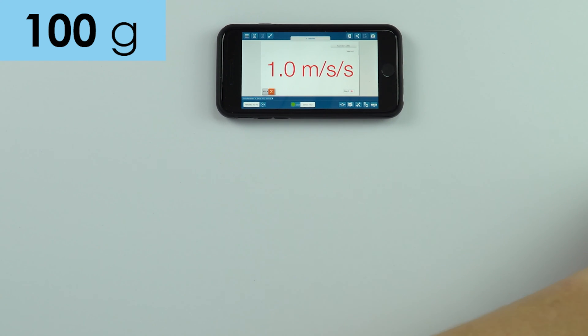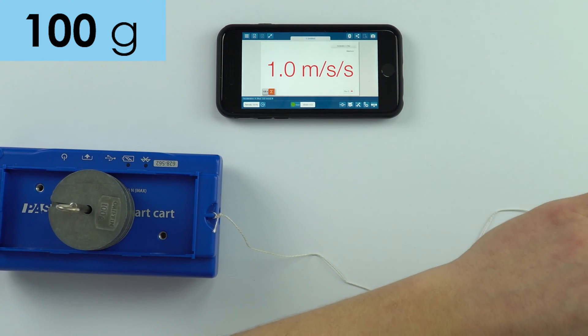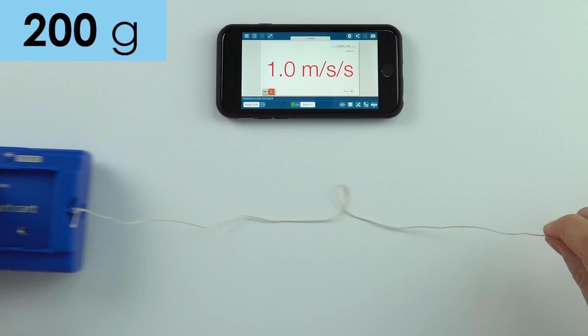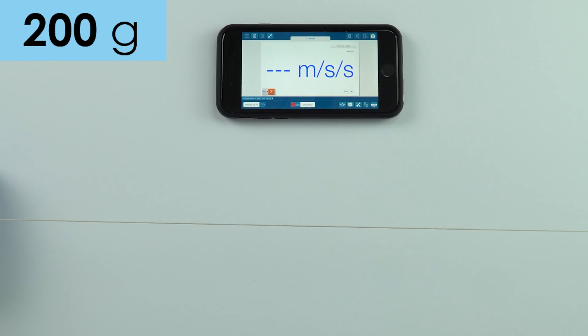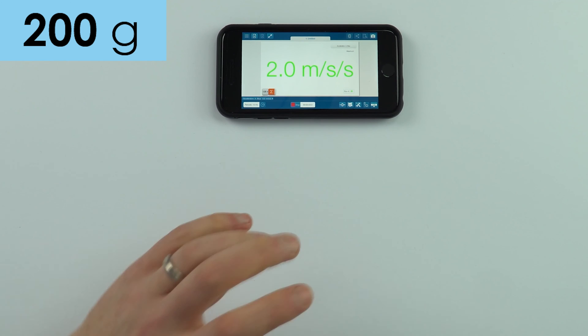So I'm now going to take this mass and take one of these and put it on there. So we now have 200 grams overhanging the edge of the bench. I'm going to put this back to here, line it up, press start. And we've got 0.2 which might be an anomaly, so I might do that one again. Okay, that looks more like it. 2.0 meters per second squared.